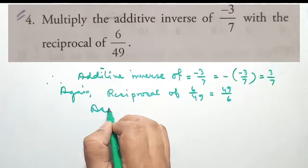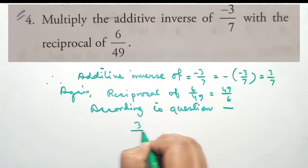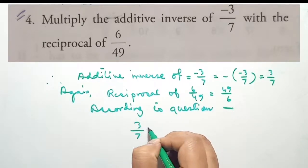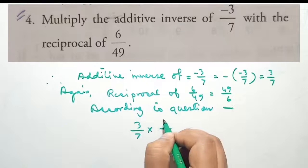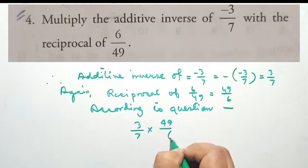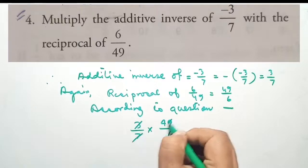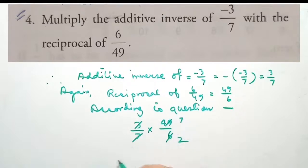According to the question, we multiply 3 by 7 into 49 by 6. Therefore, 3 into 3 is 6 in the denominator and 7 into 7 is 49. Cancelling gives us the answer 7 by 2.